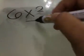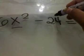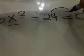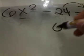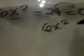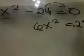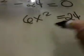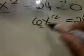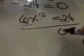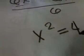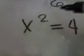In order for us to get the value of x, we will transfer 24 to the other side. So it's 6x squared is equivalent to 24. In order for us to eliminate this 6, we need to divide both sides by 6, which gives us x squared is equivalent to 4.